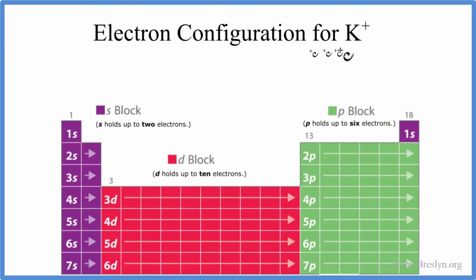To write the electron configuration for the potassium ion, that's K+, we'll first write the electron configuration just for normal potassium, neutral potassium, as it's found on the periodic table.